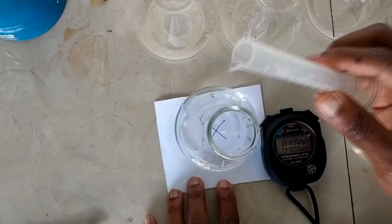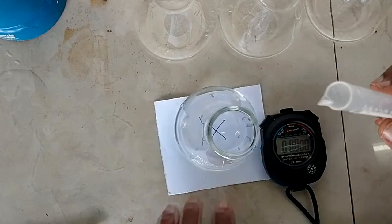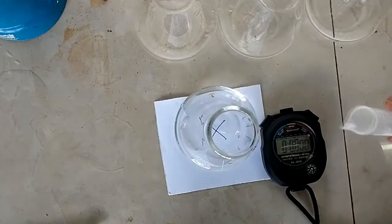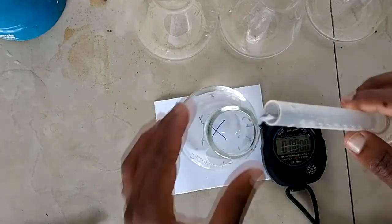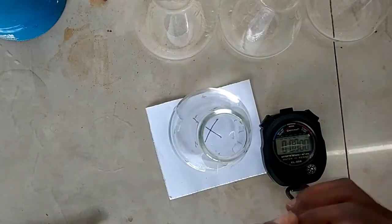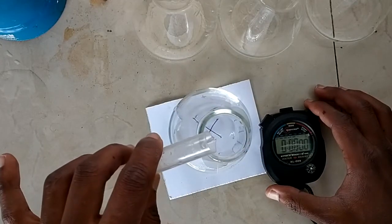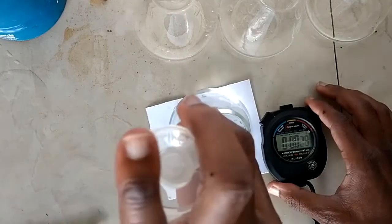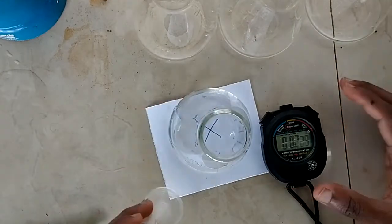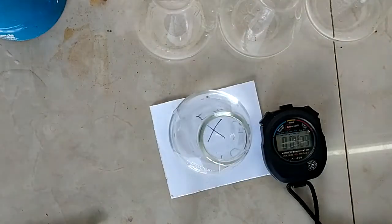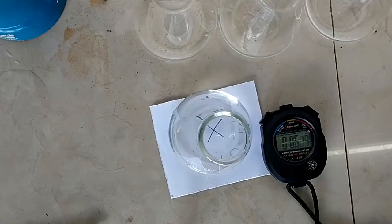So what I'm going to do, I'm going to add the HCl, the two cubic centimeters, swirl the mixture and place it onto the X, and immediately I should start the stopwatch. So I go there. Good. So you need to measure the time it will take for the X to disappear completely when it is viewed from the top.